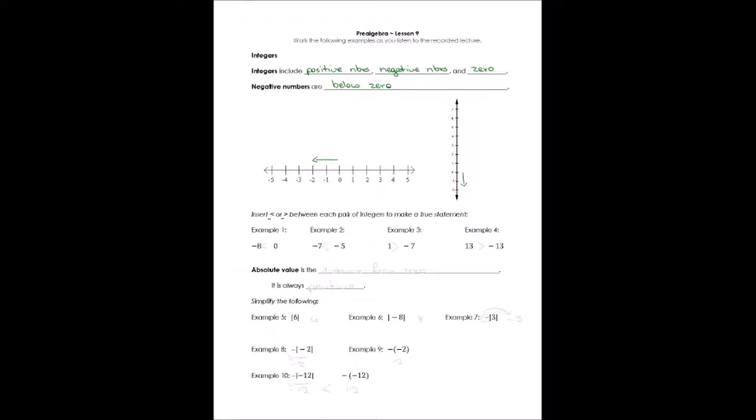Example one says negative eight and zero. Well, zero is always bigger than any negative number. You can look at your number line and tell the numbers to the right are always larger. Zero is larger than any negative. So we would point our small sign toward the negative eight, and we would read it negative eight is less than zero.